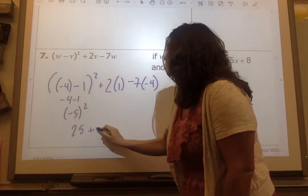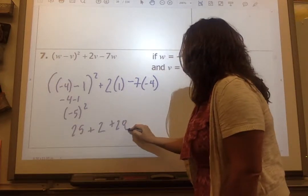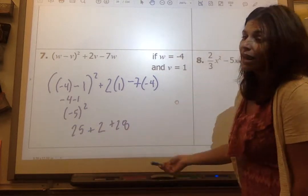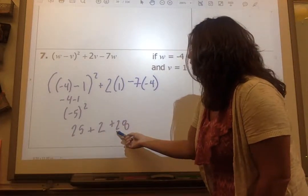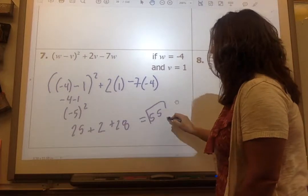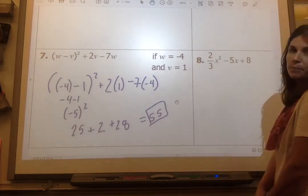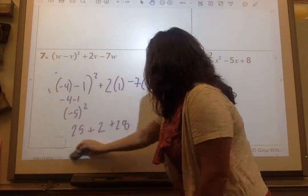This is multiplication, so plus 2. This is multiplication, so plus 28. Commutative property says I can add them any way I want. So I'm going to do 2 plus 28 is 30, and 30 plus 25 is 55. So 55 is going to be my answer.